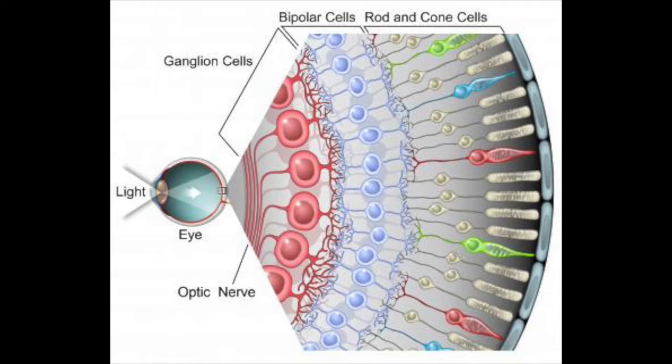Photoreceptors are modified neurons, but structurally they resemble tall epithelial cells turned upside down, with their tips immersed in the pigmented layer of the retina. These tips are the receptive regions of rods and cones, called the outer segments, and contain an elaborate array of visual pigments that change shape as they absorb light. These pigments are embedded in areas of the plasma membrane that form disks, which increases the surface area available for trapping light. In rods, the disks are discontinuous and stacked inside a cylinder like pennies in a coin wrapper. In cones, the disk membranes are continuous with the plasma membrane so the interiors of the cone disks are continuous with the extracellular space.